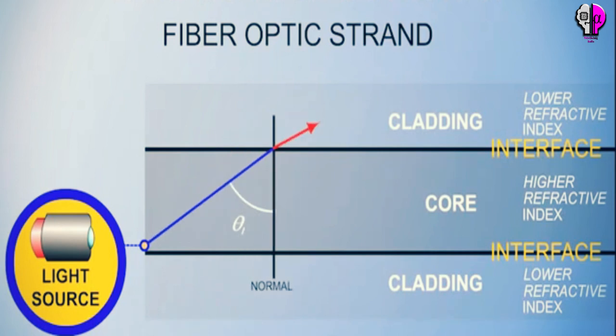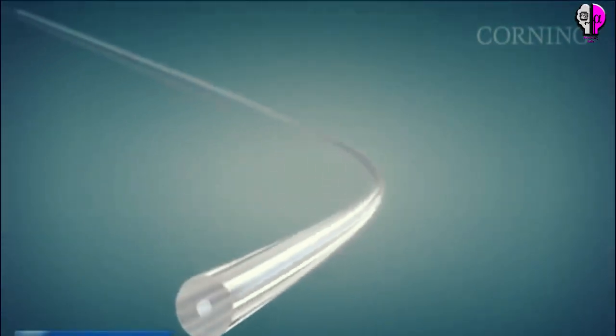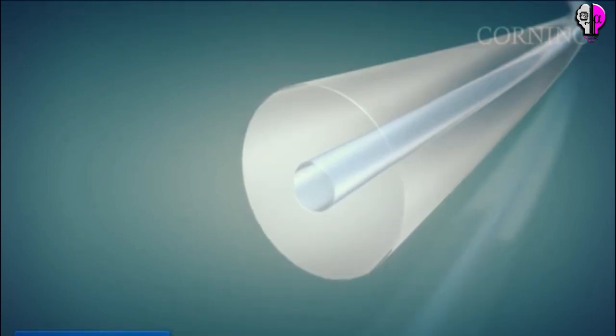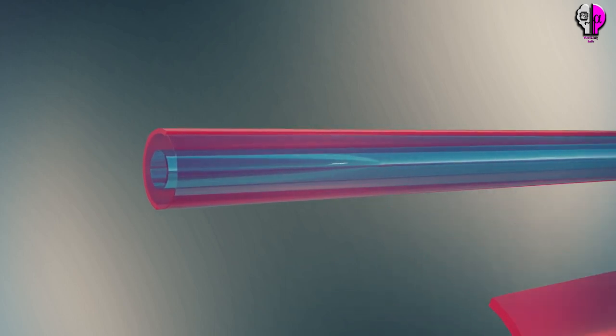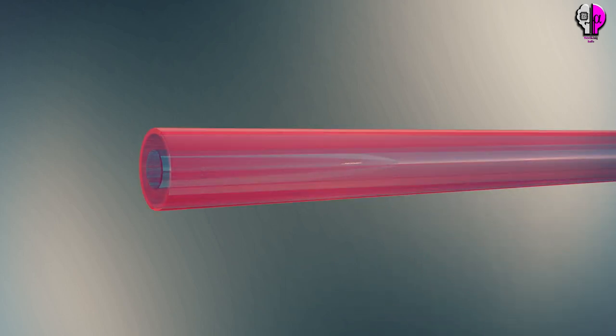More technically, the cladding has a lower refractive index. If the cladding of the fiber is scratched, it may break. So, a plastic coating called the buffer covers the cladding to protect it. Often, the buffered fiber is put inside an even tougher layer called the jacket. This makes it easy to use the fiber without breaking it.